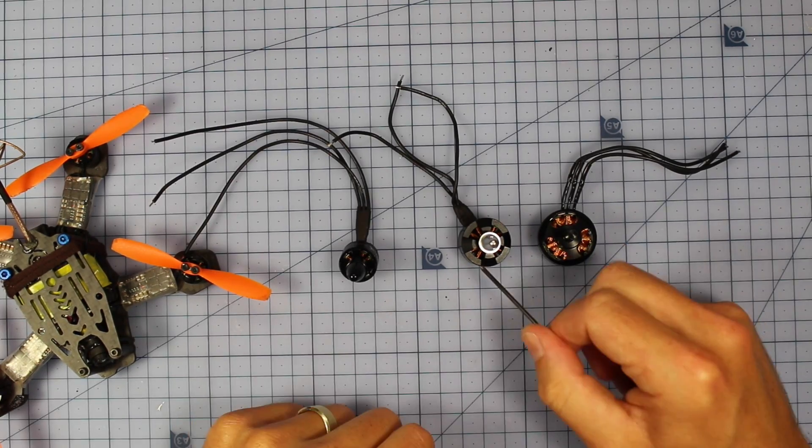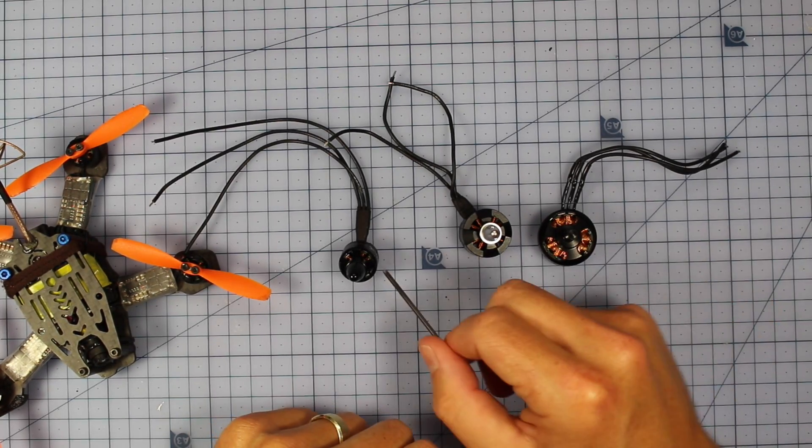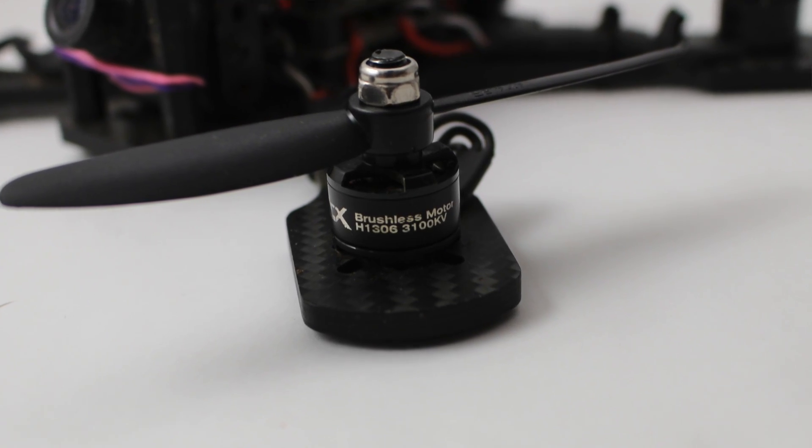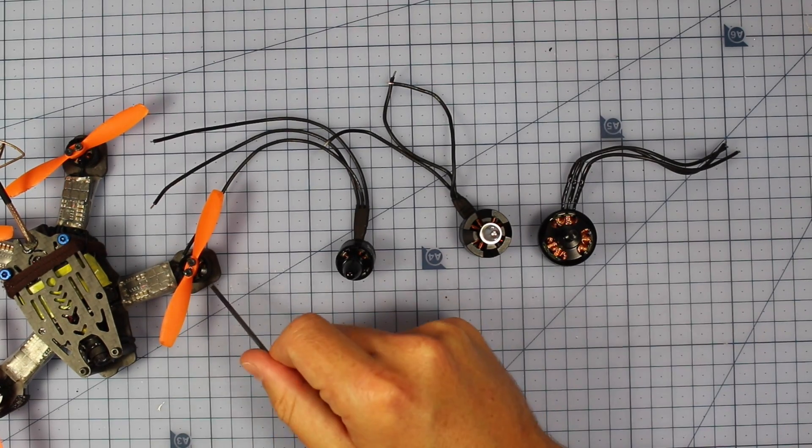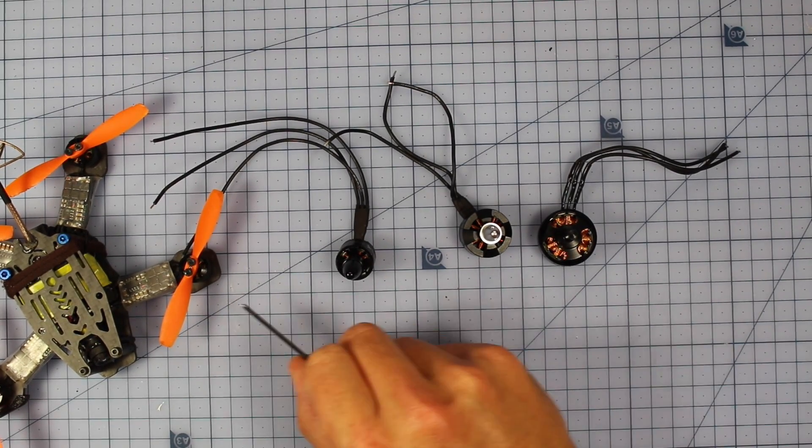This is an 1806, so 18mm across the motor. This is the 1306, so 13mm, and the 1105 right here is 11mm. And the reason this is important is because the size usually determines how much grunt a motor has.